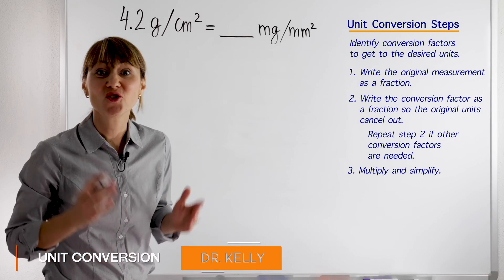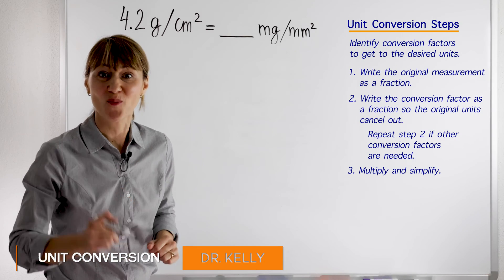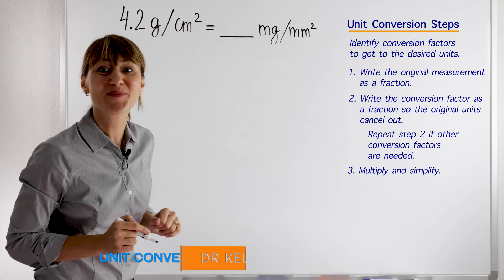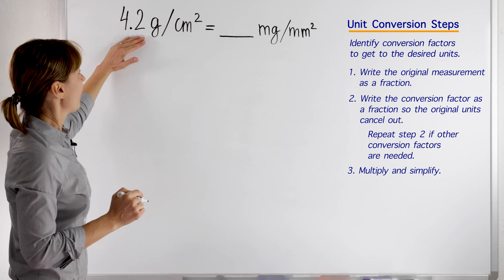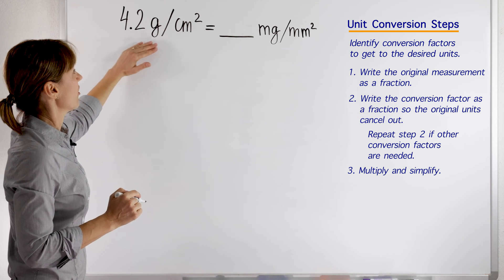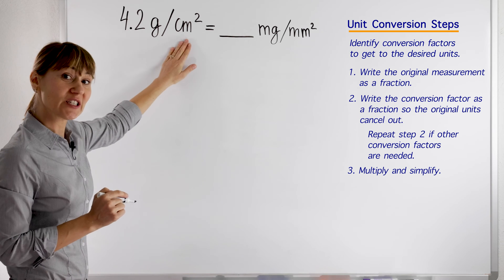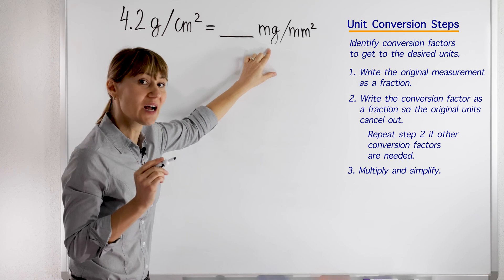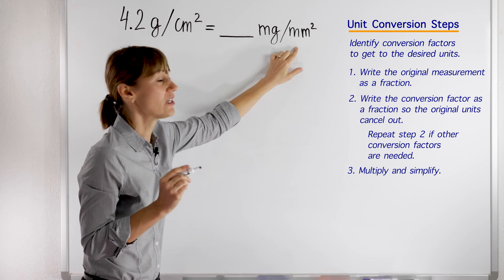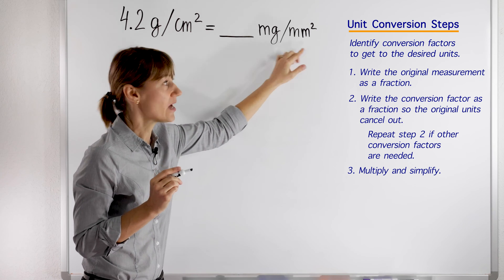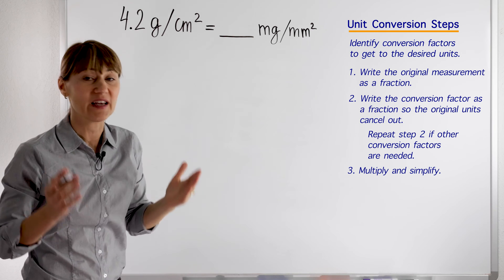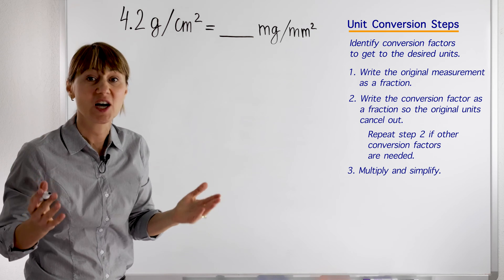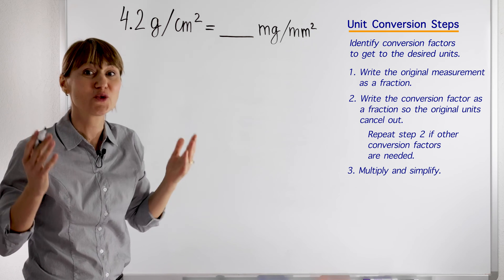When you think of conversions, your heart can drop. Not today. Let's do this problem together. We have 4.2 grams per centimeter squared that we need to change to milligrams per millimeter squared. First, we need to identify what conversion factors will help us to do that.